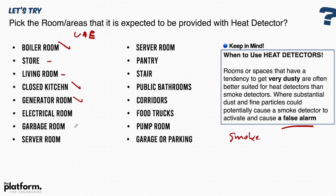Generator rooms also have a chance of smoke generated from the generator and exhaust pipe, which can cause false alarms. Garbage rooms sometimes require a heat detector. Pantry and stairs are normal areas. Server rooms are normal. Public bathrooms require a heat detector to avoid false alarms caused by condensation, steam, or other moisture-related reasons. Corridors are normal usage so we install smoke detectors. Food trucks require a heat detector since there is cooking inside.